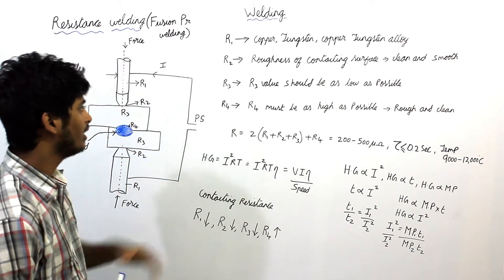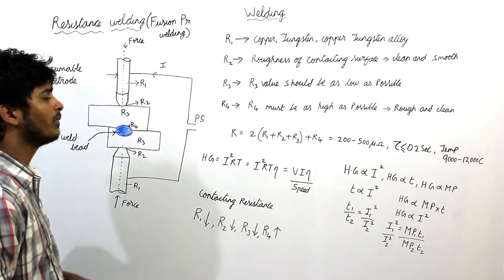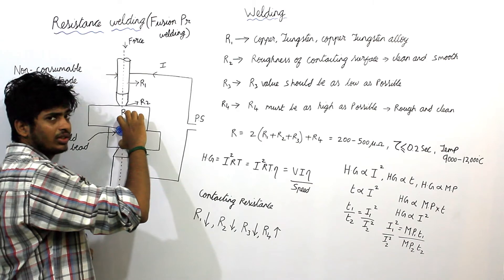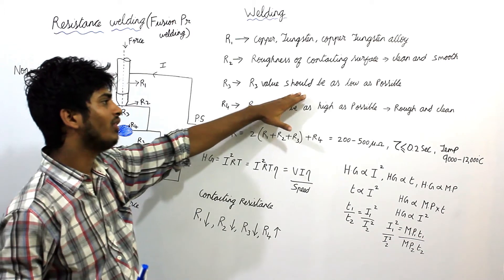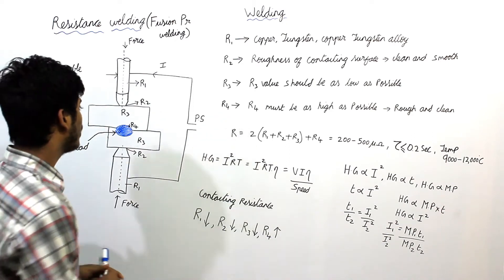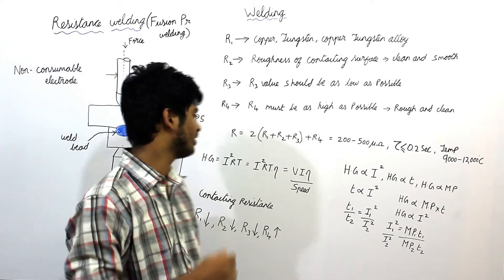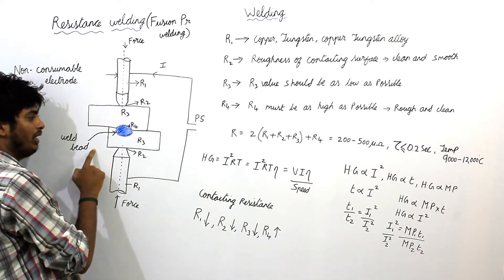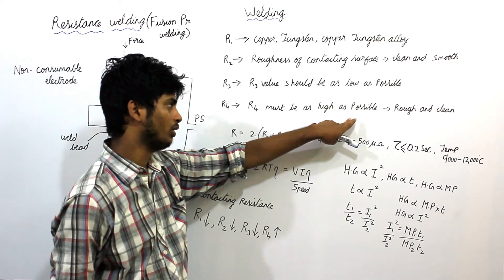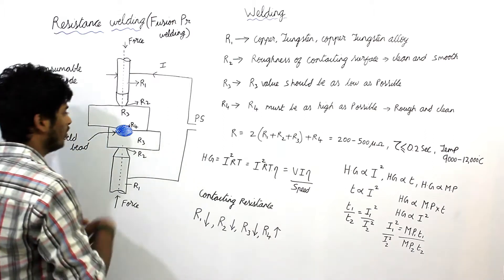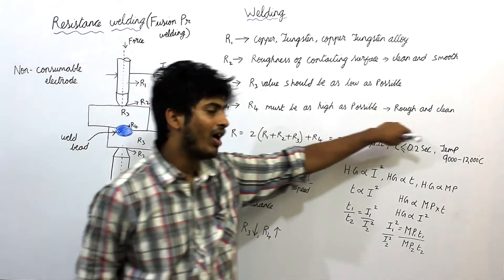R3 is the contacting resistance of the workpiece itself. R3 should be as low as possible to avoid weld formation throughout the full thickness of the section — if R3 is very high, the weld will form throughout. R4 is the contacting surface between the two workpieces, also called the faying surface or weld interface. R4 should be as high as possible, so the surface should be rough and clean to achieve high resistance at the joint.